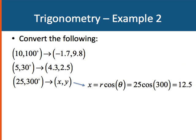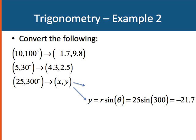The last one, the same method. The x coordinate is 25 cosine 300, which is 12.5. y is r sine theta, which is 25 times sine 300, which is minus 21.7.